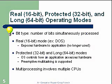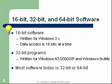In protected mode, there are no memory conflicts, which used to cause a lot of blue screens. Preemptive multitasking is now supported, and multiprocessing involves multiple CPUs. 16-bit software was written for Windows 3, with data access 16 bits at a time. 32-bit programs were written for Windows NT, 2000, XP, and also Windows 9X and ME. Most software today is 32-bit and we're moving to 64-bit.